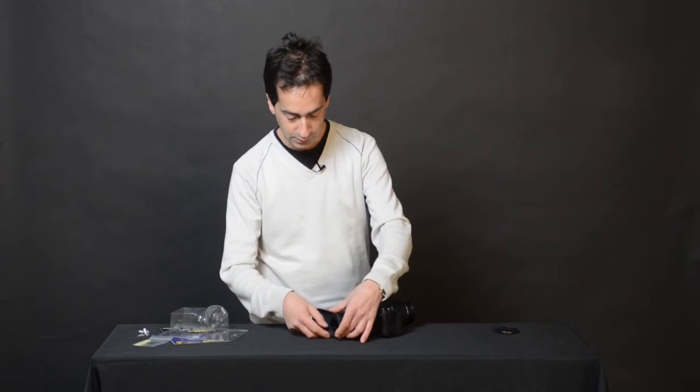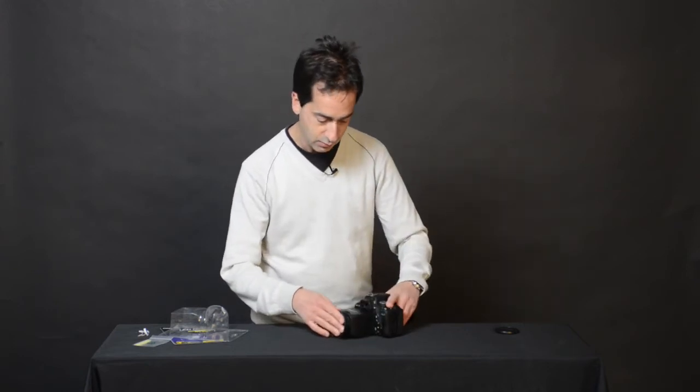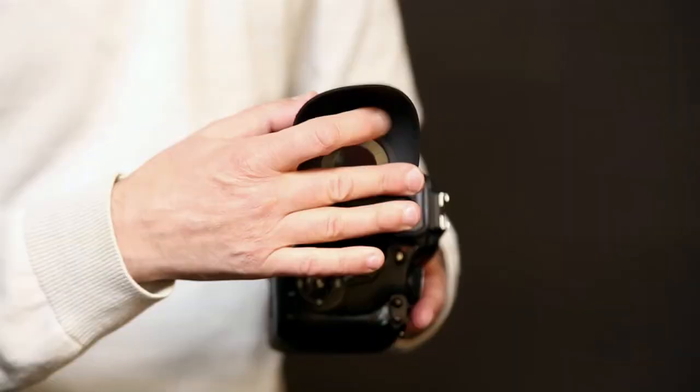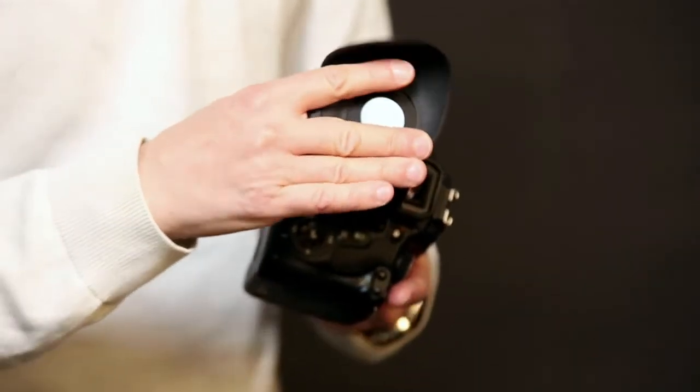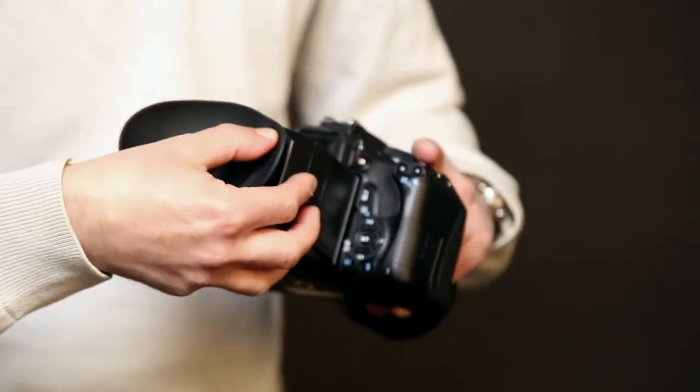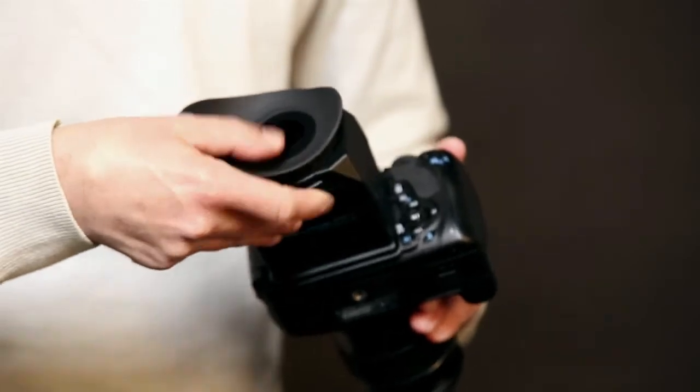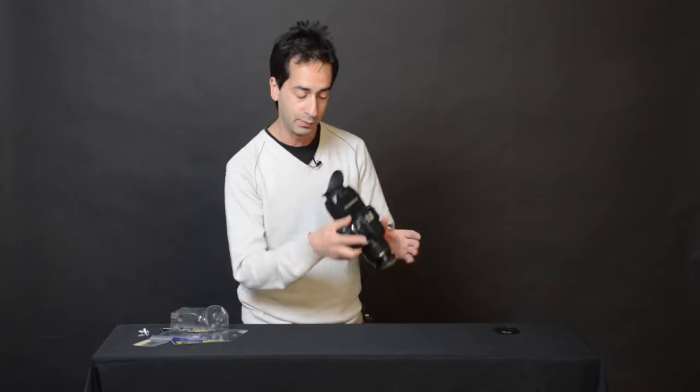We can just rotate it 180 degrees. Make sure it's seated on nice and straight. Pushing down all the way around. And now we can use it with our other eye.